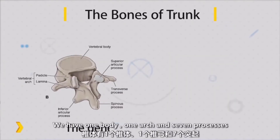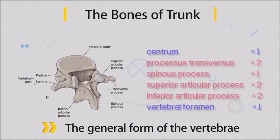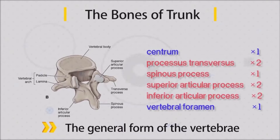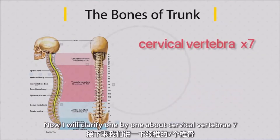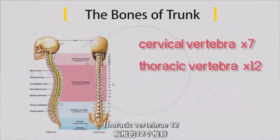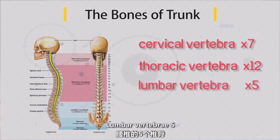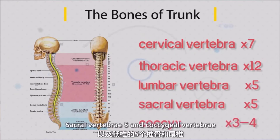So we have one body, one arch, and seven processes. Now I will clarify each type one by one: cervical vertebrae — seven; thoracic vertebrae — twelve; lumbar vertebrae — five; sacral vertebrae — five; and coccyx — three or four.